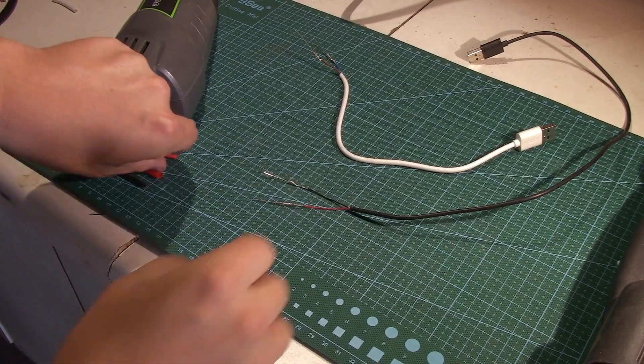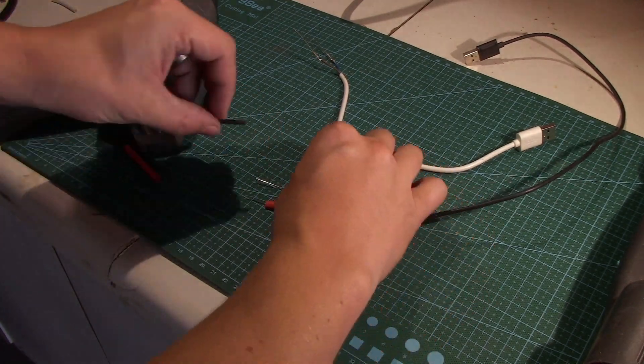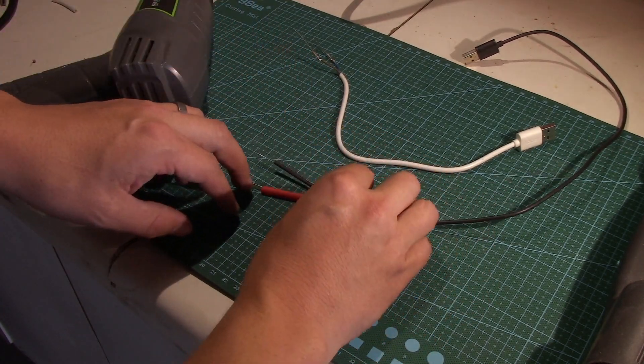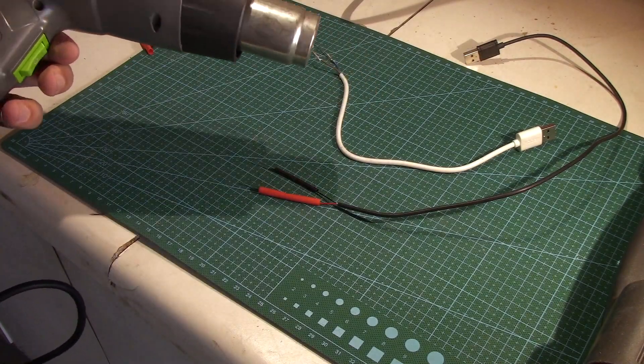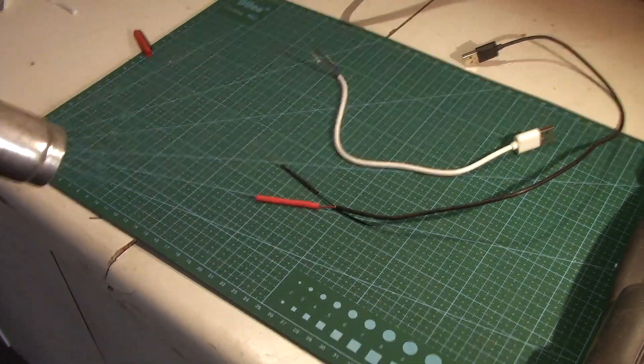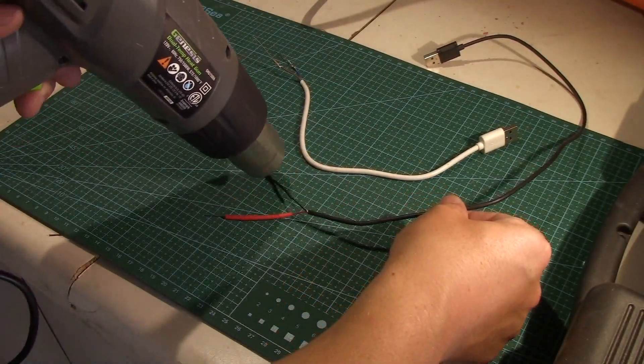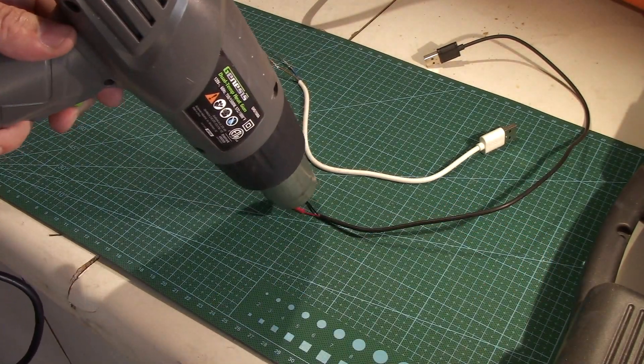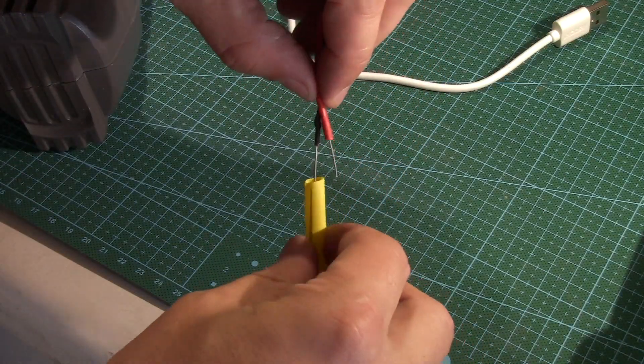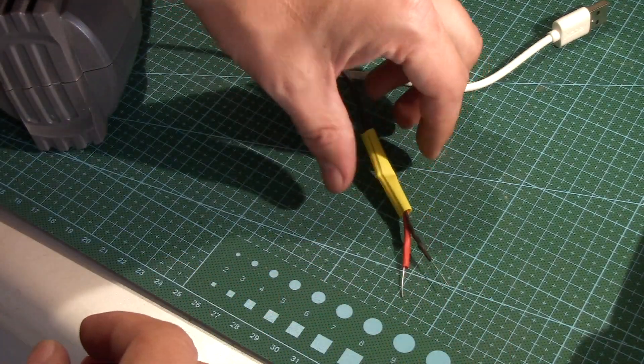All that's left to do is to add some heat shrink to both sides just to keep them from shorting each other out, and also to help us remember which side is positive and which side is negative. These ones were a little flimsy so I had another piece to kind of keep them from falling apart.